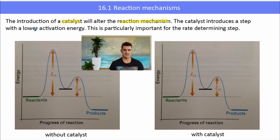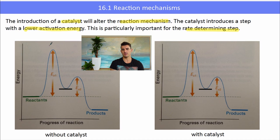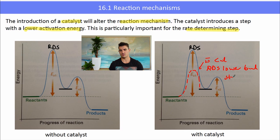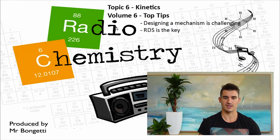If we introduce a catalyst into the mixture, it will have an impact on the rate determining step and will lower the activation energy of that step. The rate determining step always has the highest activation energy because it is the slowest process in the mechanism. The catalyst affects all the delta H values, but it has the biggest impact on the rate determining step — reducing the activation energy and speeding up the reaction.